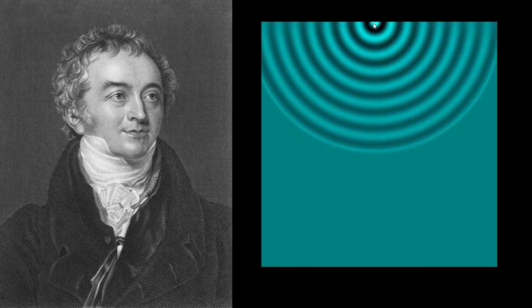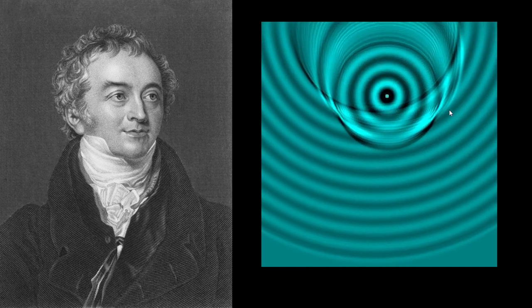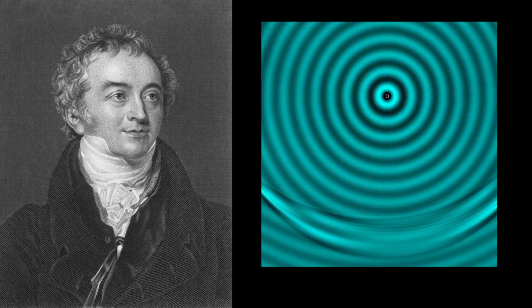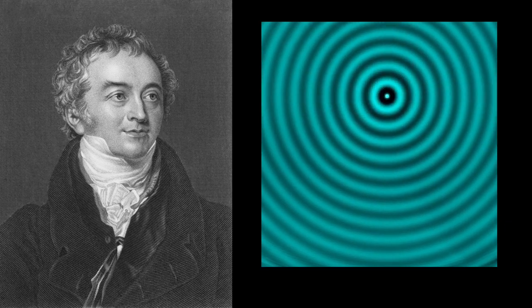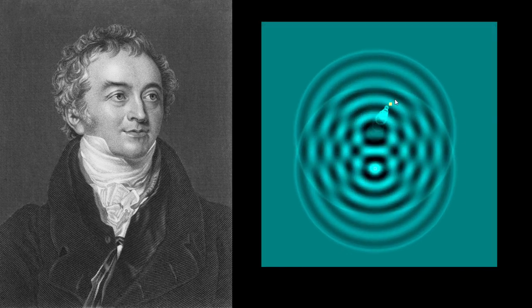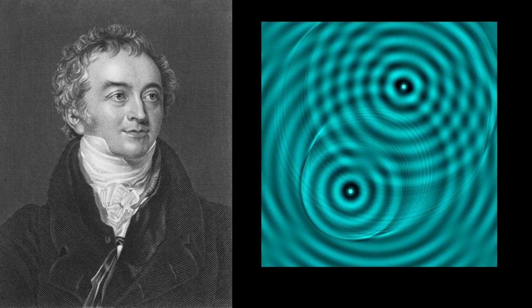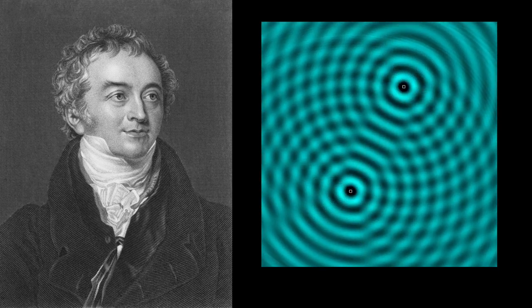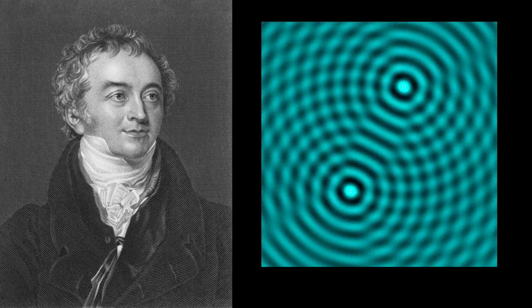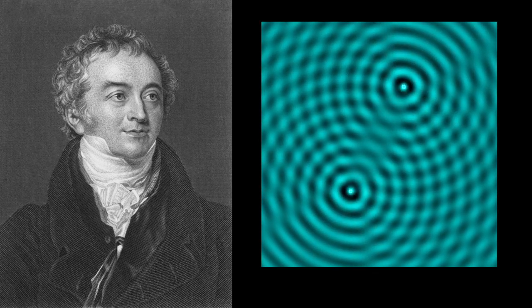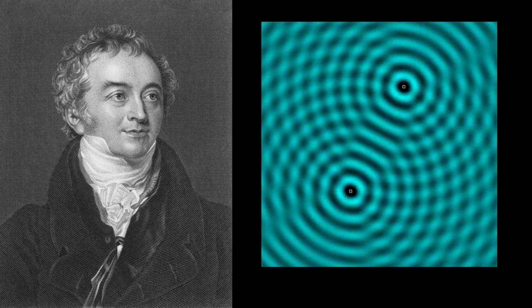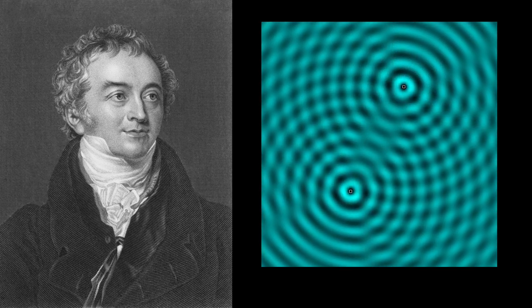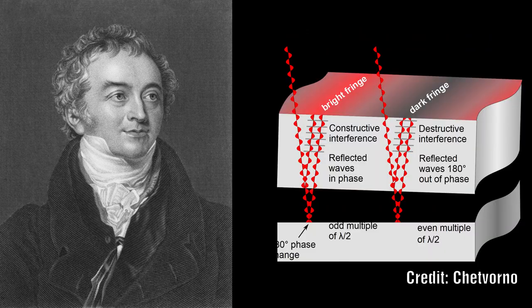Suppose a number of equal waves of water move upon the surface of a stagnant lake with a certain constant velocity and enter a narrow channel leading out of the lake. Now suppose another similar series of waves are excited in the lake which arrive at the same channel with the same velocity and at exactly the same time as the first. Neither series of waves will destroy each other but their effects will combine. Where wave peaks meet they will combine and where a trough meets a peak they will create a smooth surface. His view is that a similar effect takes place whenever two portions of light are mixed. This he called the general law of interference of light.